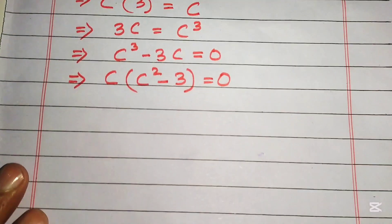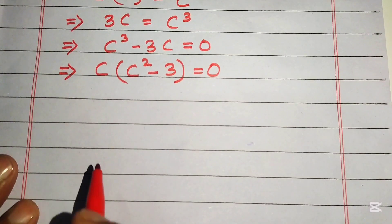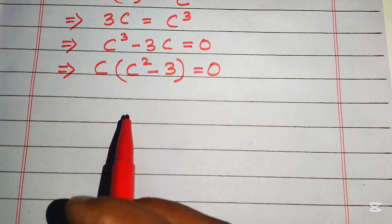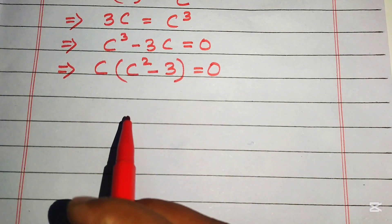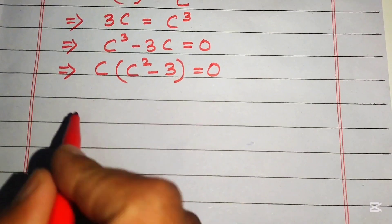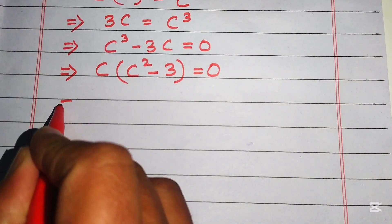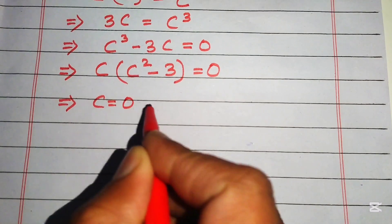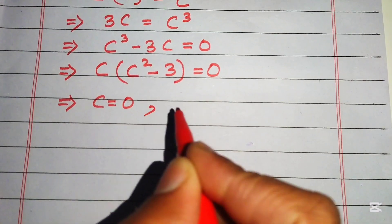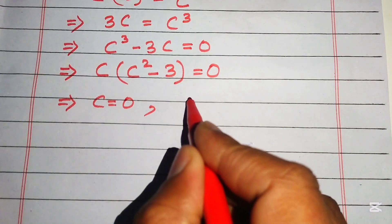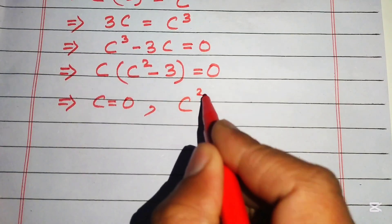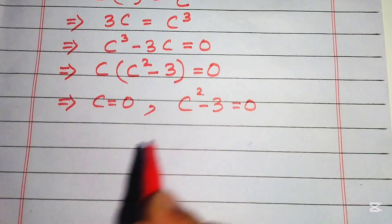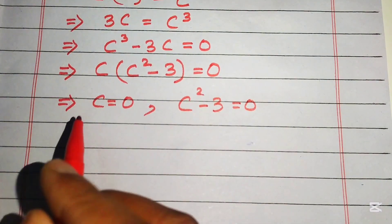We divide this into two cases. The first case is c equals zero, and the second case is c squared minus three equals zero.